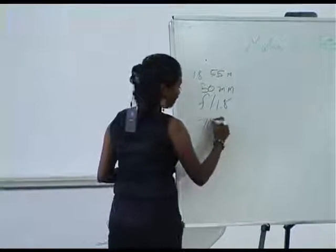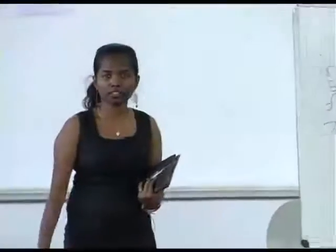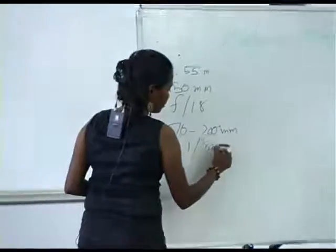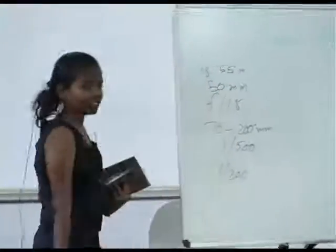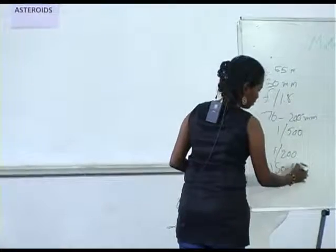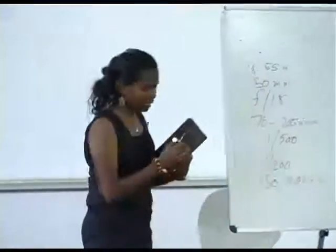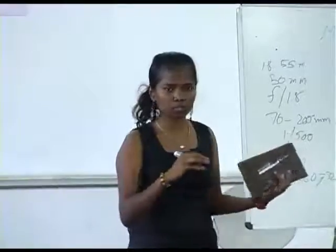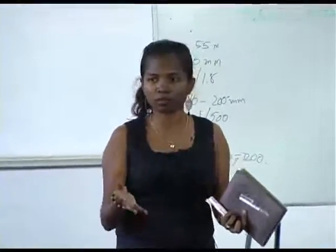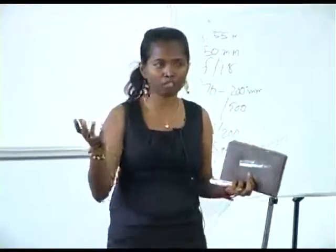The shutter speed numbers noted are 1 by 500 and 1 by 200. ISO is also noted. These are the technical numbers which you have seen in a camera. When you go to the processing part or composing a shot, have you noticed any numbers?